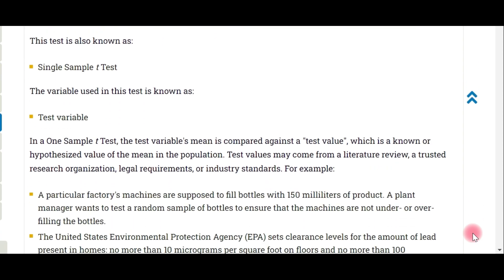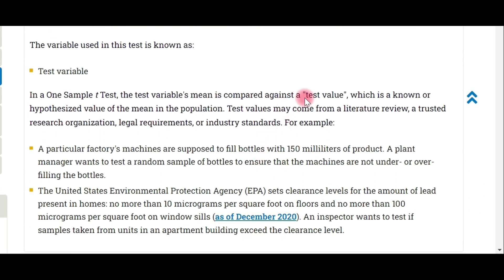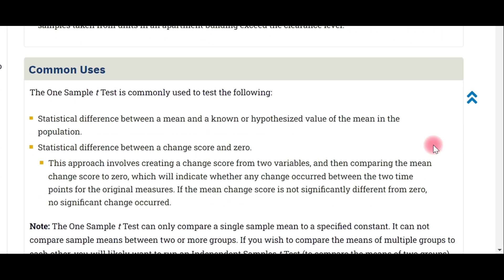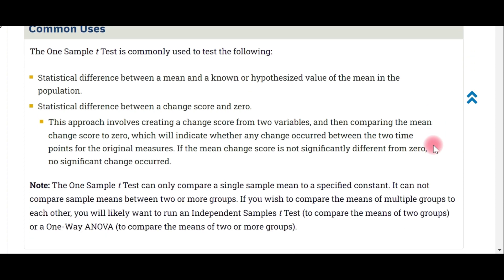In the one sample test, the test variable mean is compared against the test value. The test value is the hypothesized value of the population mean. The mean of the test variable is compared to this average or hypothesized value. This is the variable being compared to check the hypothesis.